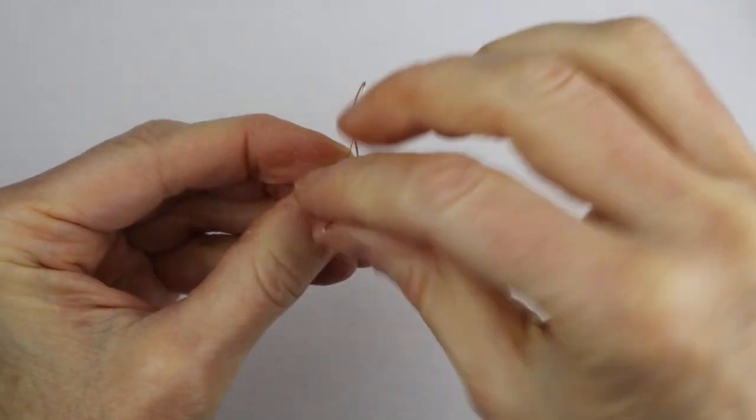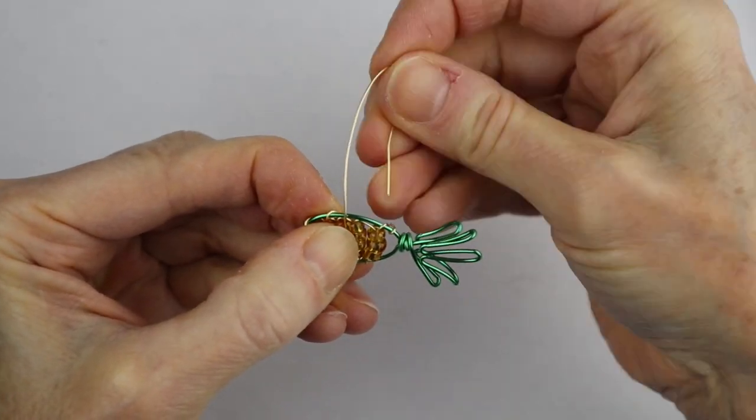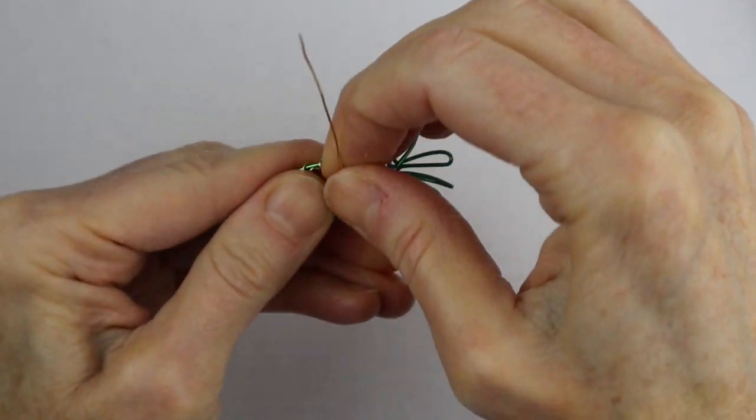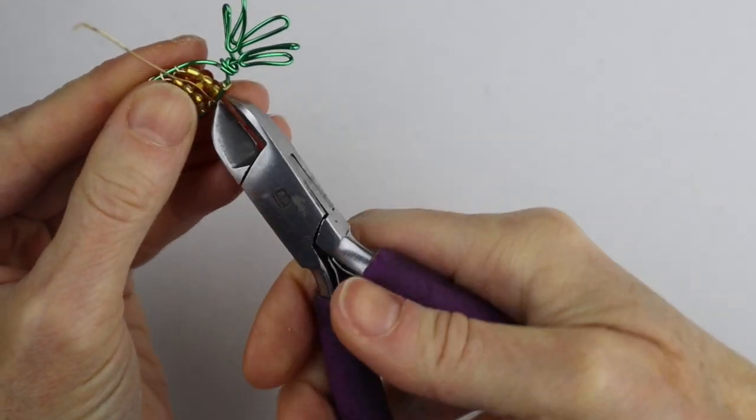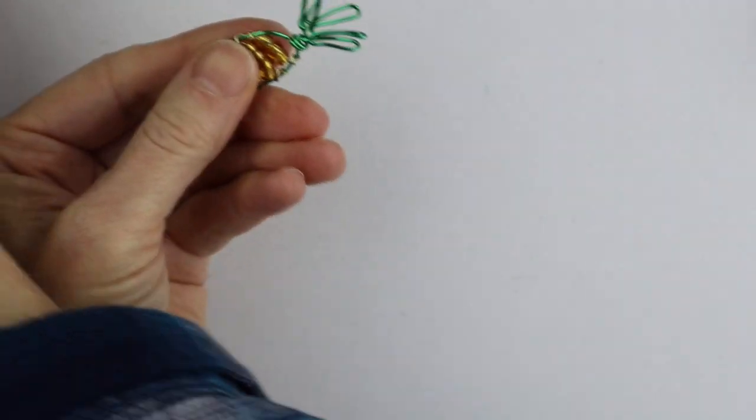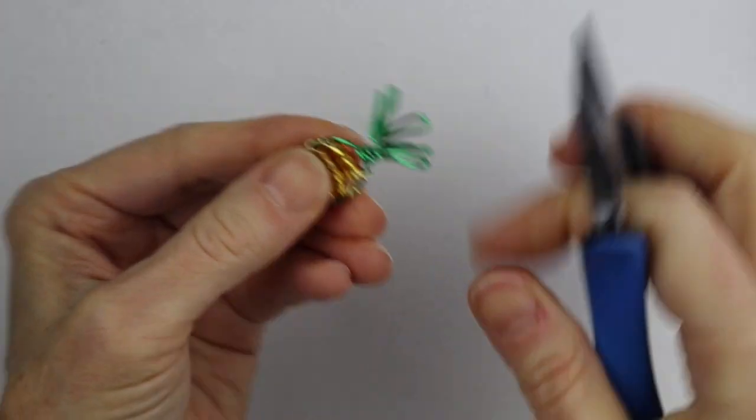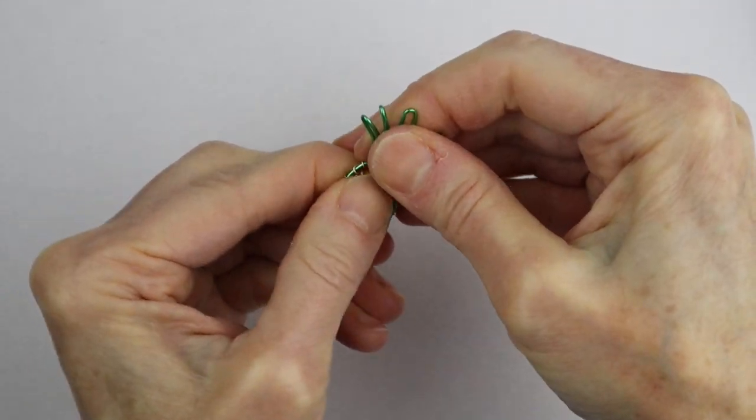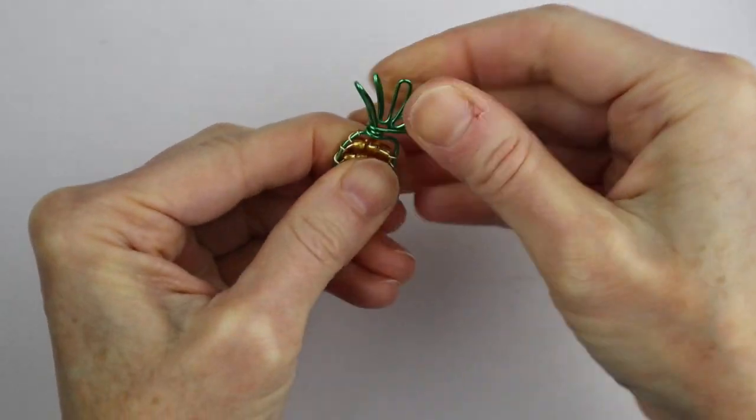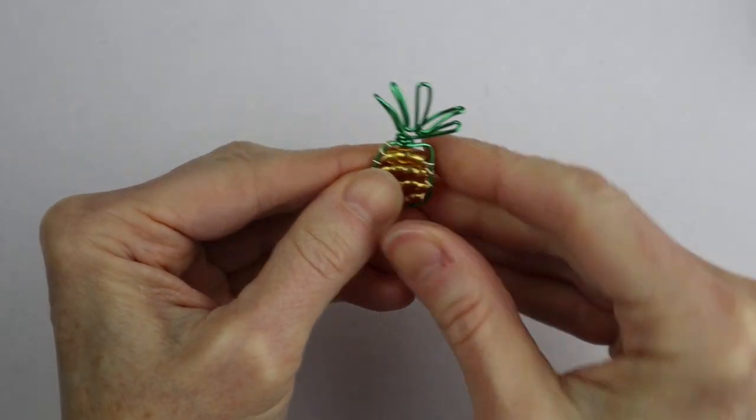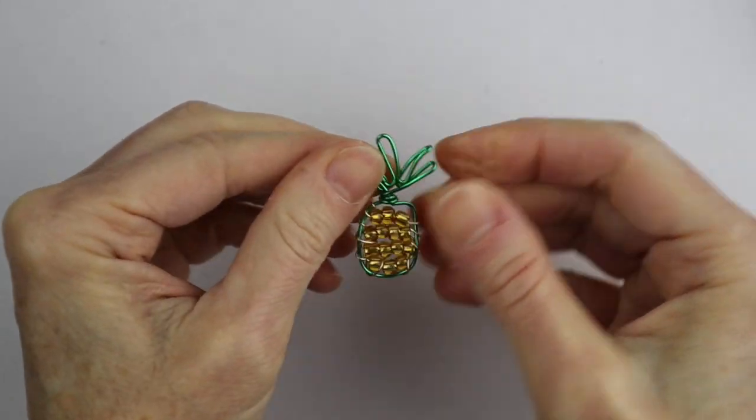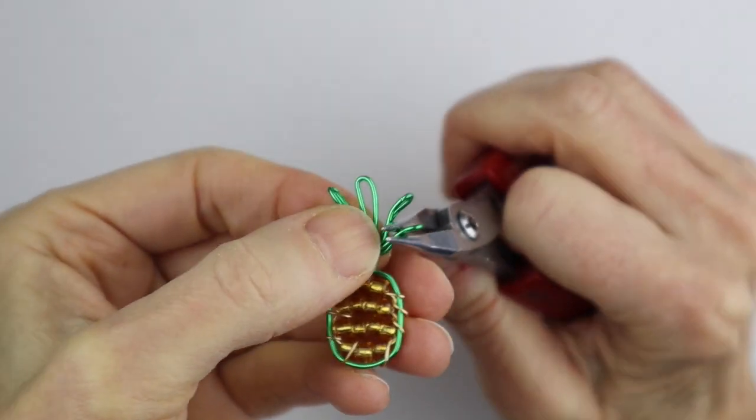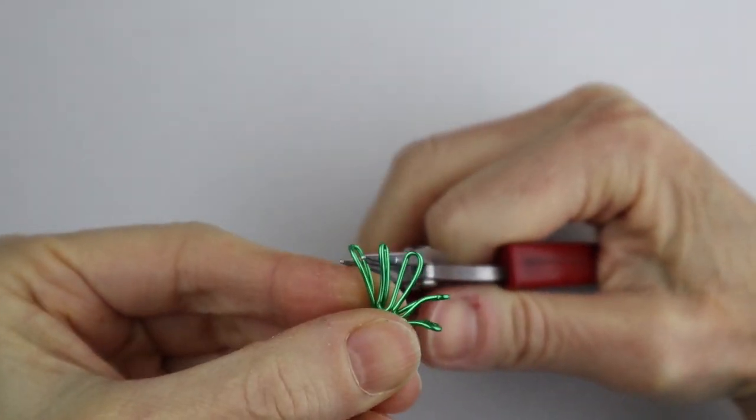Just keep going until you've gone so it looks even, all the way around the outside, then clip the end. If you have any sharp ends, just push them in like that. We're just going to adjust it so these beads are centered. To finish it off, you can go ahead and curve the leaves a little bit if you like.